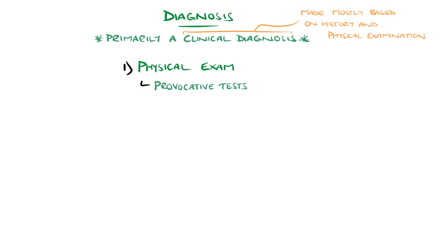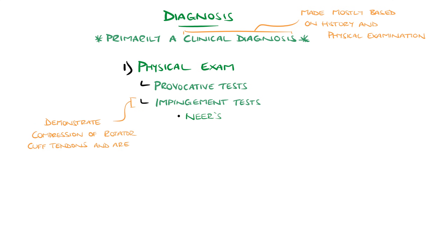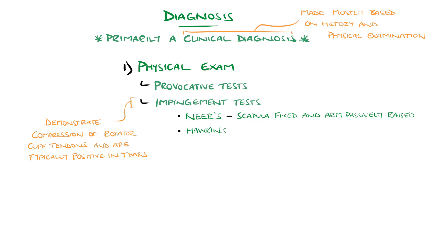Tests for impingement — meaning compression of the rotator cuff tendon — are typically positive with rotator cuff tears. These include Neer's test, where the examiner keeps one hand on the patient's scapula to prevent rotation, and as the patient's arm is elevated by the examiner, reproduction of pain is a positive test for impingement. And Hawkins test, where the patient's arm is positioned at 90 degrees of elevation and the elbow is bent to 90 degrees — the examiner applies an internal rotation force on the arm, and reproduction of pain is positive.